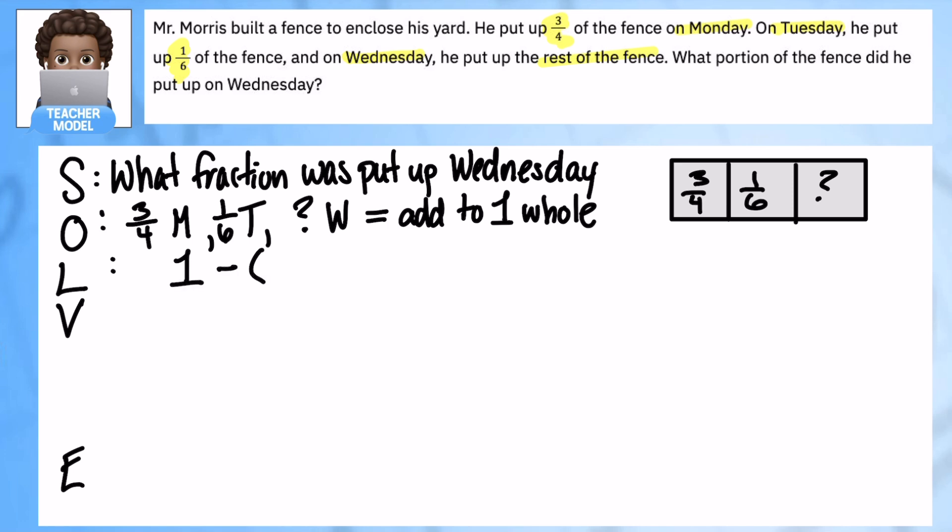One minus three fourths plus one sixth, and that's going to give me that number that I want. Now I'm also writing it this way because I like putting everything instead of as two different steps. I like putting them together, but I know some of you may have said add these first and then whatever that number is, I would do one minus that sum.